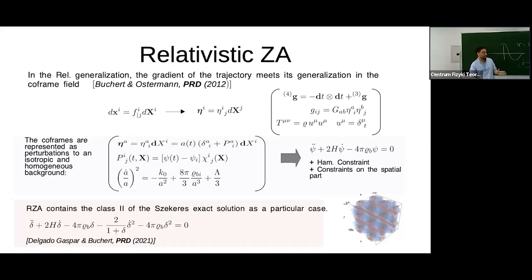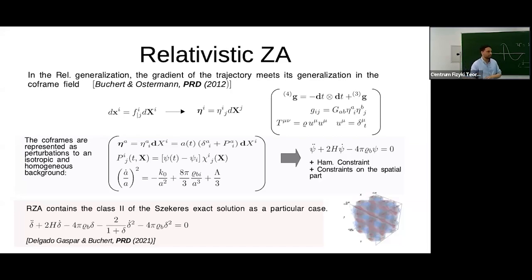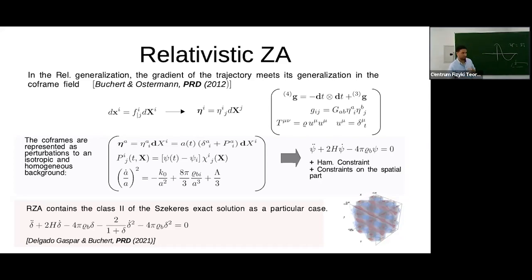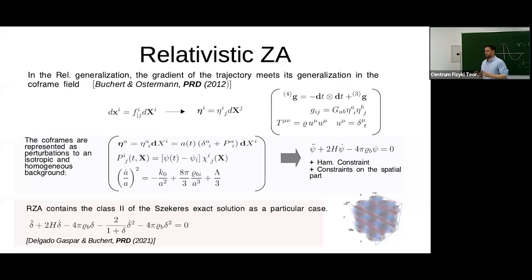Since the exact Szekeres solutions are nonlinear, and the relativistic Zel'dovich approximation reproduces them, we conclude that the relativistic Zel'dovich approximation is valid beyond the linear regime. For modes that are not exact, it can be used as an extrapolation into the mildly nonlinear regime. We are currently working on visualizing these results — preserving filamentary structure in simulations going into the nonlinear regime with density contrast of order three — and developing a method to control the error of the approximation.